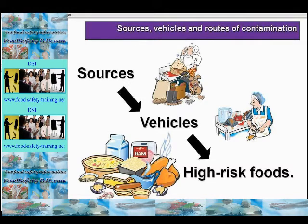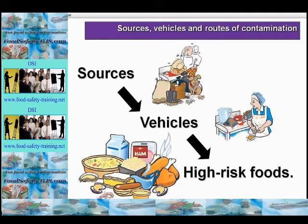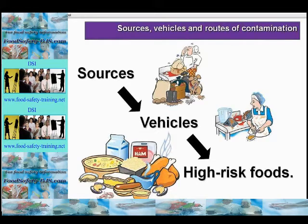Vehicles can include hands, cloths, utensils and equipment, hand contact surfaces, and food contact surfaces. As regards routes, a route is the path taken by food poisoning bacteria to get from the source to the high-risk food. This may be direct or indirect via a vehicle. Cleaning, disinfection and good hygiene practices are essential to remove routes. We need to remove the source and/or avoid the vehicle and/or provide a barrier to the route — for example, cleaning and disinfection.